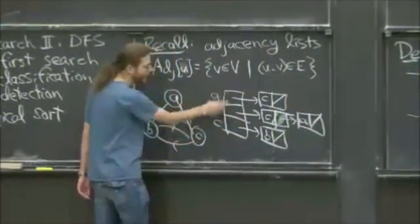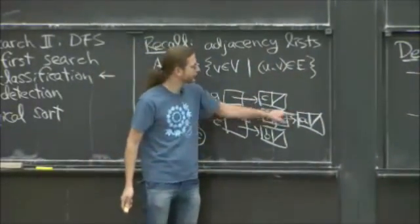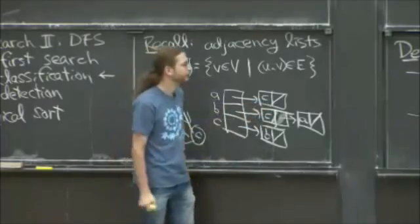We needed V slots in an array, plus we needed E items in these linked lists, one for each edge.